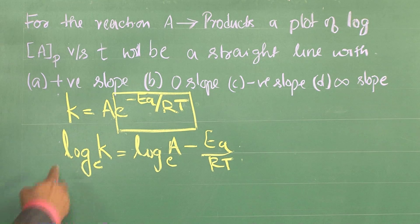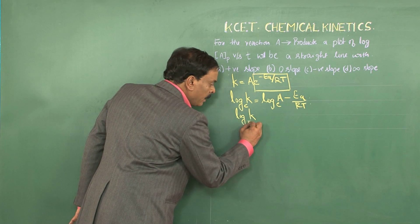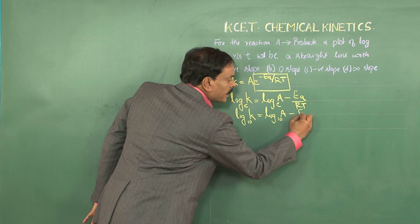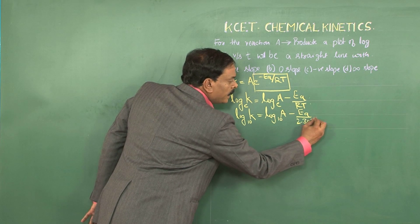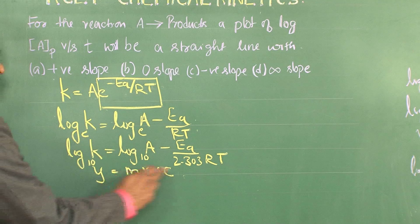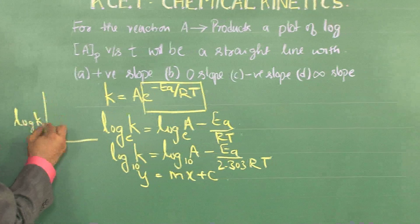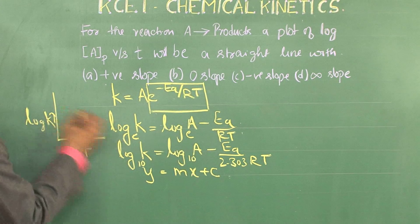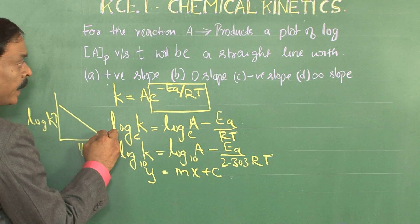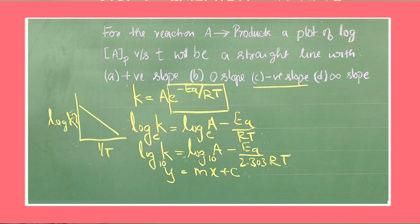Taking log to base 10, the equation becomes: log K = log A − Ea/(2.303RT). This equation is an equation for a straight line. When we plot a graph of log K versus 1/T, we get a straight line. Since the slope is negative, we get a straight line with decreasing slope, and therefore the correct answer for this question is negative slope.